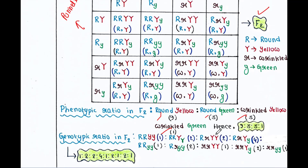From the Punnett square, we can see that the phenotypic ratio in F2 was 9:3:3:1 — that is, 9 round yellow, 3 round green, 3 wrinkled yellow, and 1 wrinkled green seeds.